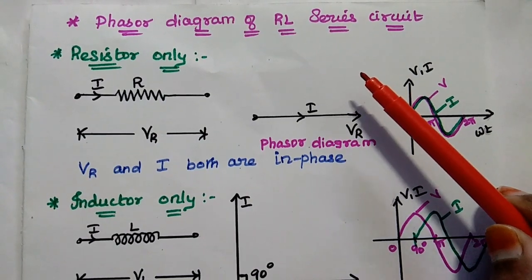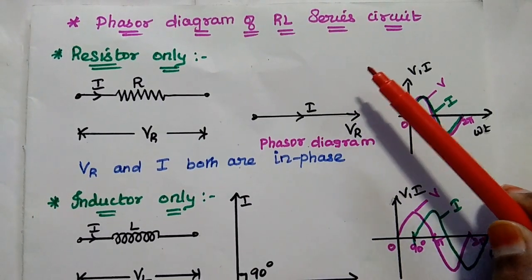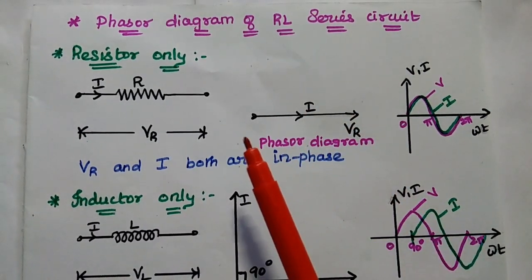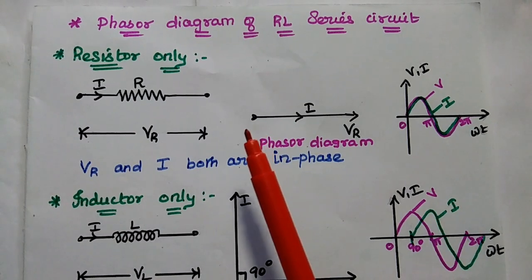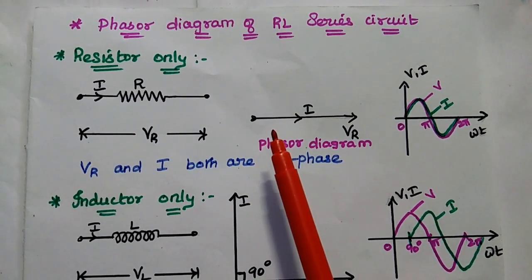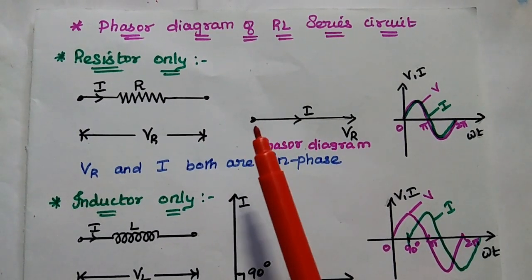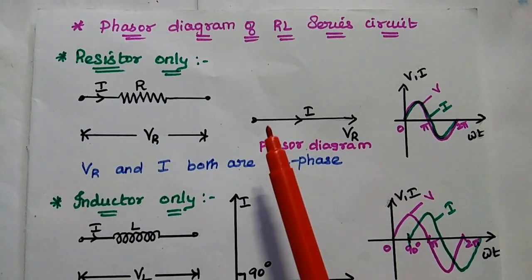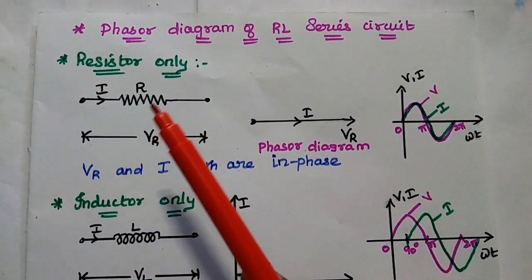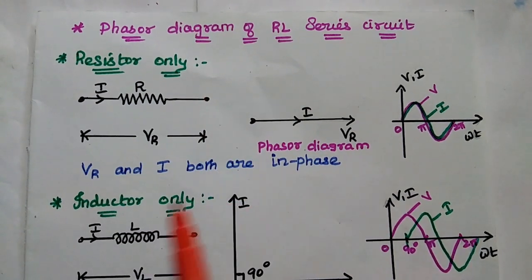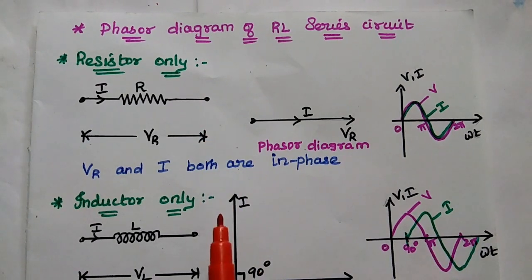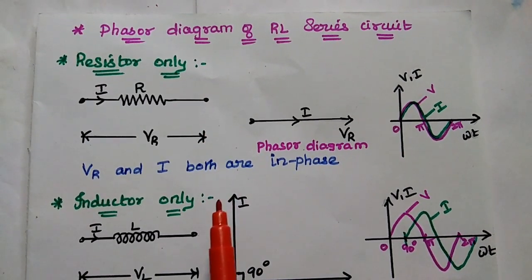Next, we are going to discuss the phasor diagram of the RL series circuit. This phasor diagram concept is very important in electric circuits because it is a convenient way of representing vector quantities, having both magnitude and phase. We will first find the phasor diagram for a resistor-only circuit, then an inductor-only circuit, and finally combine them to get the RL series circuit phasor diagram.